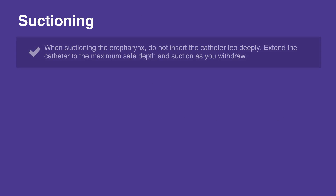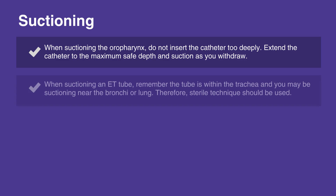Here are some tips on suctioning. When suctioning the oropharynx, do not insert the catheter too deeply. Extend the catheter to the maximum safe depth and suction as you withdraw. When suctioning an ET tube, remember the tube is within the trachea and you may be suctioning near the bronchi or lung.